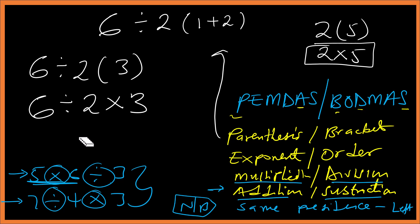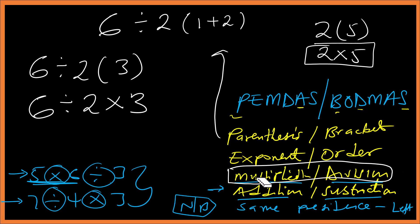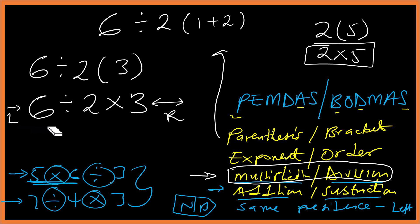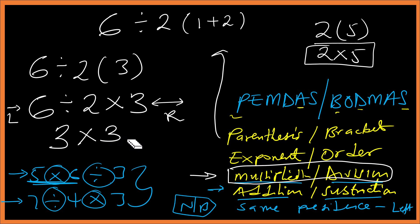We now have two operations of the same precedence: division and multiplication. So we start from the left. On the left we have 6 divided by 2, which is 3. Then 3 times 3 gives us 9. That's the correct answer.